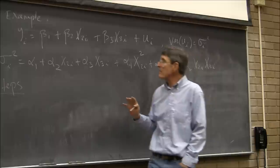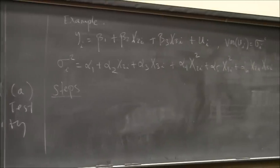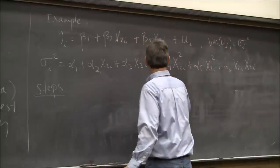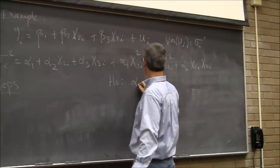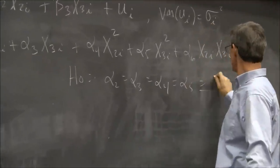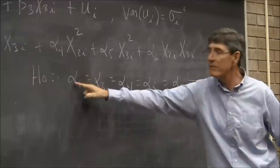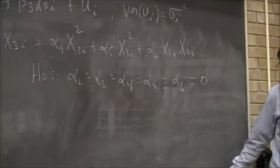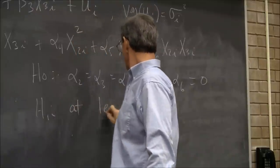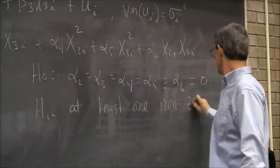The null hypothesis is α₂ = α₃ = α₄ = α₅ = α₆ = 0. That's 5 restrictions. The alternative is that at least one is non-zero — constant variance under the null versus heteroscedasticity under the alternative.